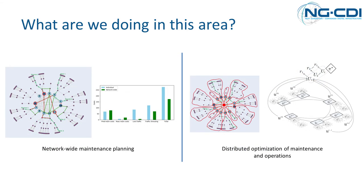Understanding and predicting network behavior is not of much use unless we actually do something about it. We need to decide what intervention — maintenance or replacement — to make on which asset at what time. The key point is that to assure service delivery to customers, we can't simply focus on optimizing decisions about individual assets, because service delivery depends on the performance of the interconnected network of assets. An optimal plan for one asset may not be optimal for other assets in the network. So we are moving from optimizing the maintenance of individual nodes to looking at the entire network and determining the best plan that balances cost, risk, and performance across the network.